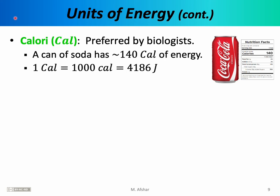Another common unit is the Calorie with a capital C, preferred by biologists and nutritionists. Nutrition labels on foods use this unit — for example, a can of soda providing 140 Calories means that through metabolism you can derive 140 Calories of energy from it. One Calorie (capital C) equals 1,000 calories (lowercase c), so it is sometimes referred to as a kilocalorie, which is also equal to 4,186 joules of energy.